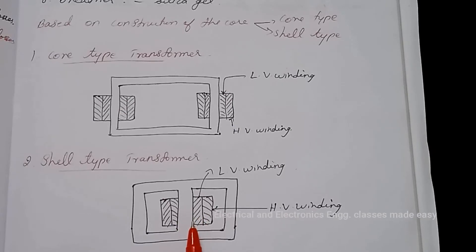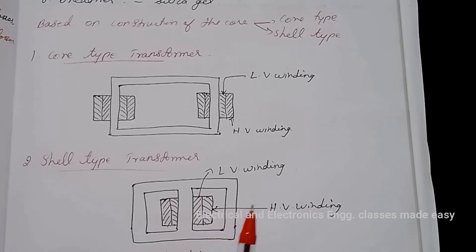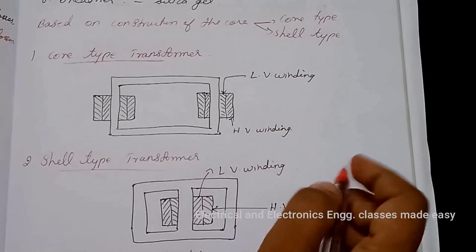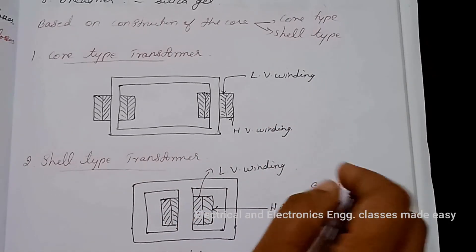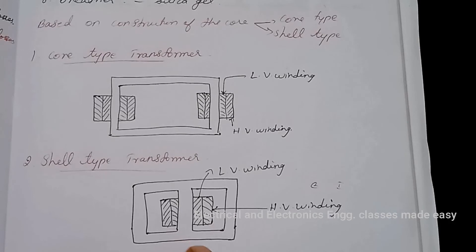So, the size of the central limb is about double that of the other outer limbs. For small type transformer, laminations are cut in the form of E and I. Alternate layers are stacked differently to eliminate continuous joints.